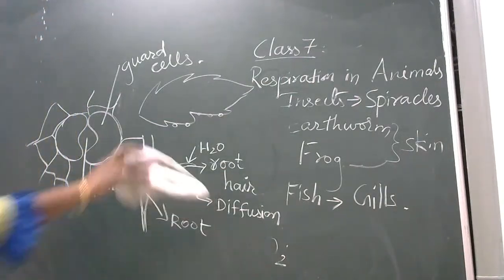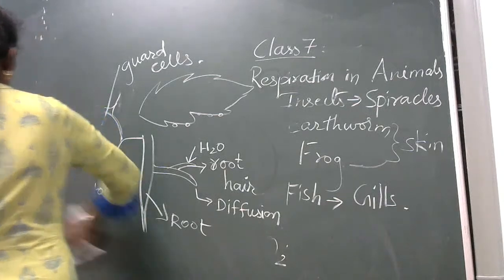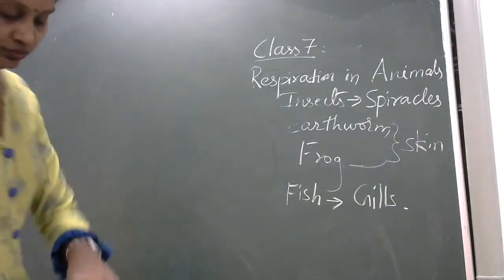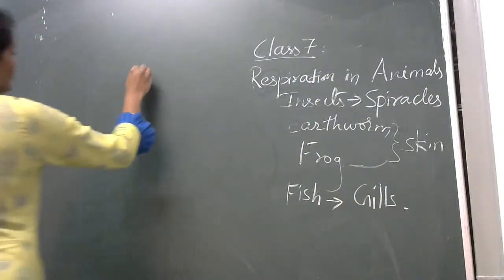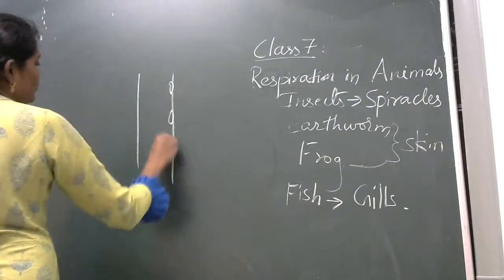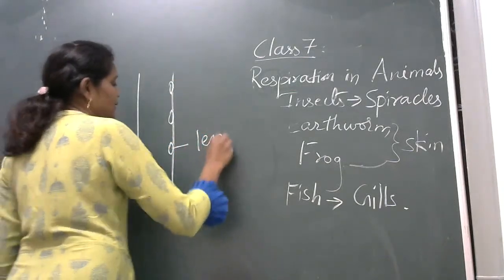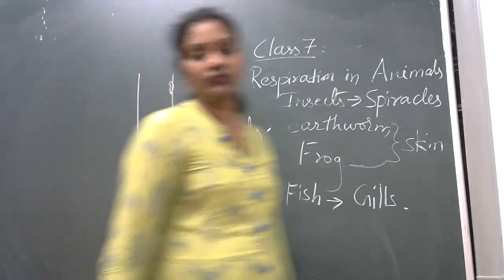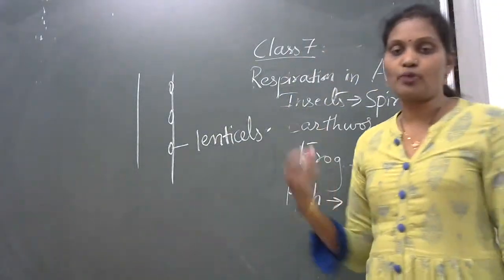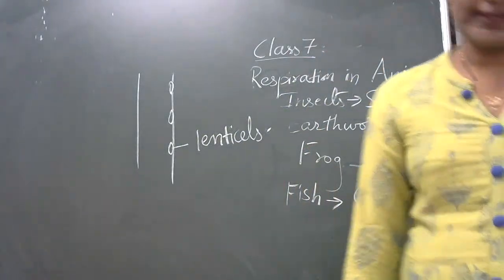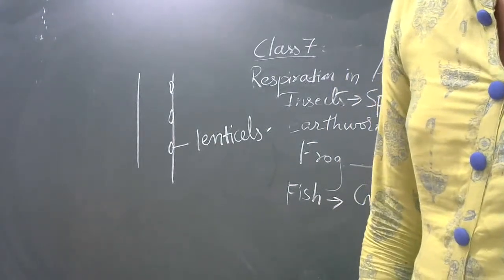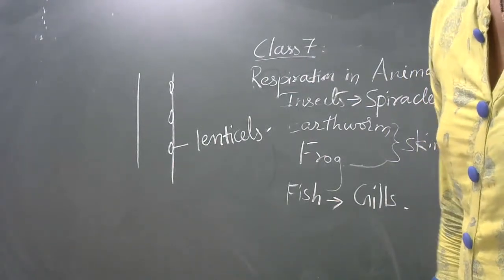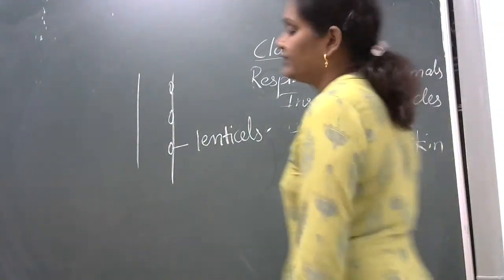Leaves and roots — now the next part is the stem. Stems are having small pores also called lenticels. These cells also can absorb oxygen. So these lenticels absorb the oxygen and give out carbon dioxide. So this is regarding the plants.